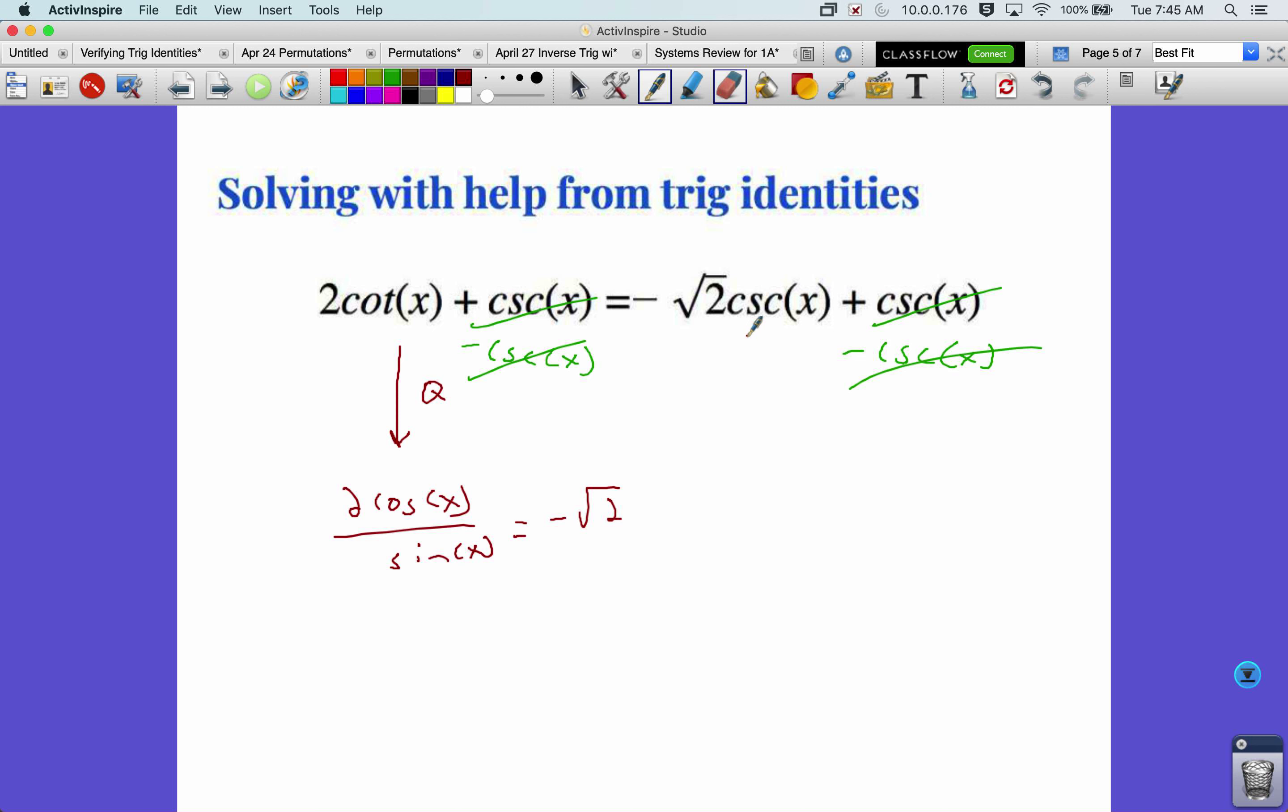And I'm going to do a reciprocal identity on this. So actually, let me turn this into a little bit more of a fraction. So reciprocal identity, cosecant is 1 over sine, so this is going to become negative root 2 all over sine of x. And I see some more canceling that can happen. I multiply sine of x to both sides, and these cancel as well. Now I've just got 2 cosine of x equals negative root 2 over 2.